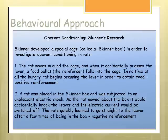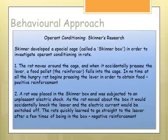Skinner developed a special cage called a Skinner box and used rats. In one experiment, the rats moved around freely and when one accidentally pressed a lever, a food pellet was dropped. The rat learnt to press the lever to gain food — that was positive reinforcement. In another experiment, an unpleasant electric shock ran underneath the box; the rat accidentally pressed the lever and the current would stop. They learnt to press the lever to remove the unpleasant stimulus — that is negative reinforcement.